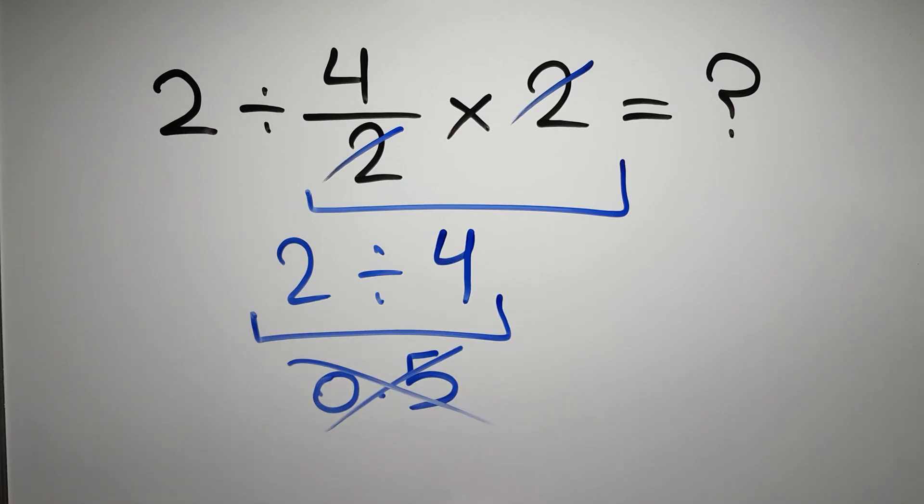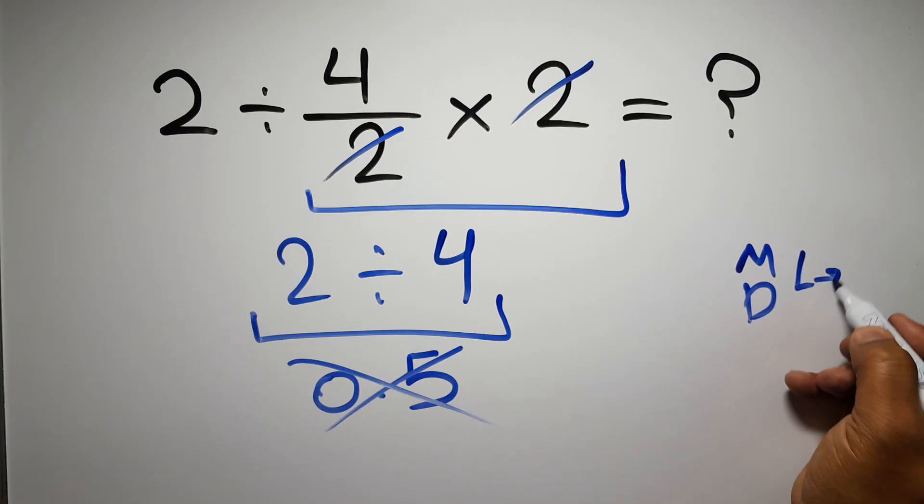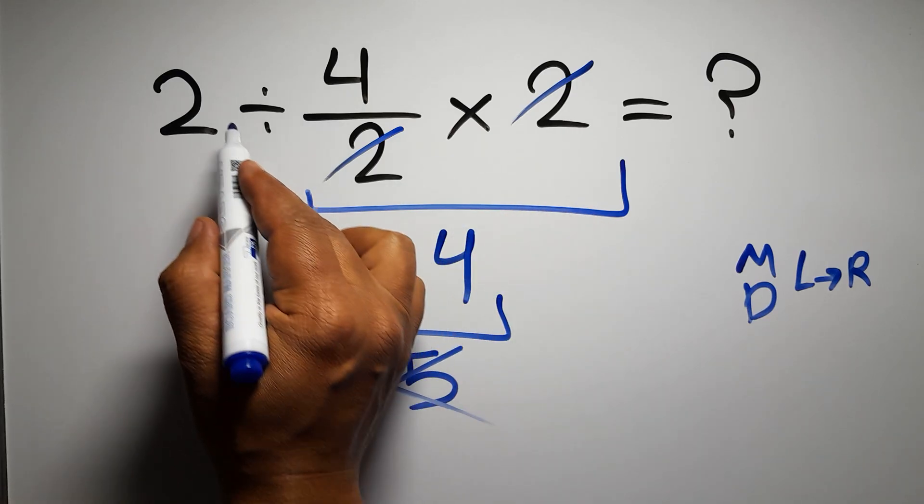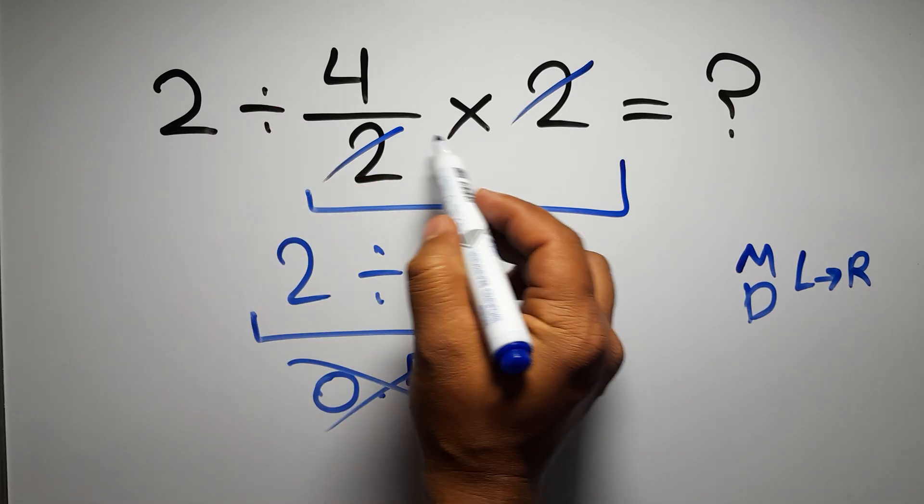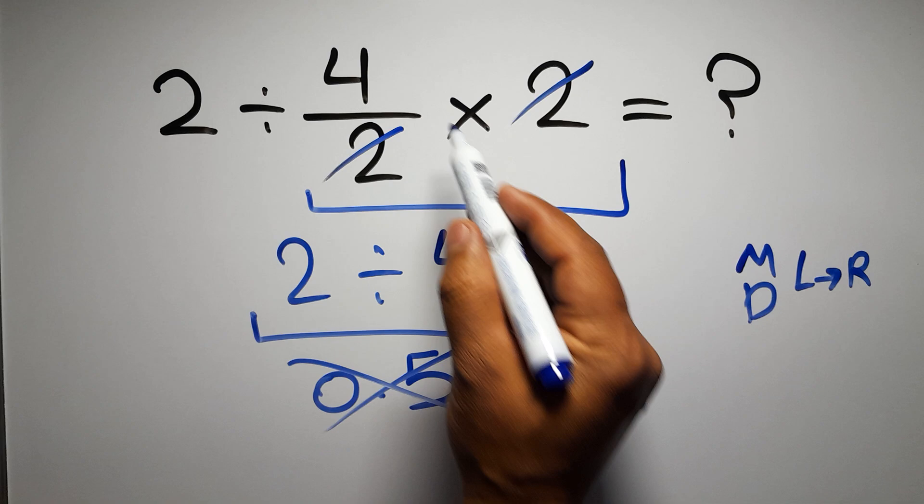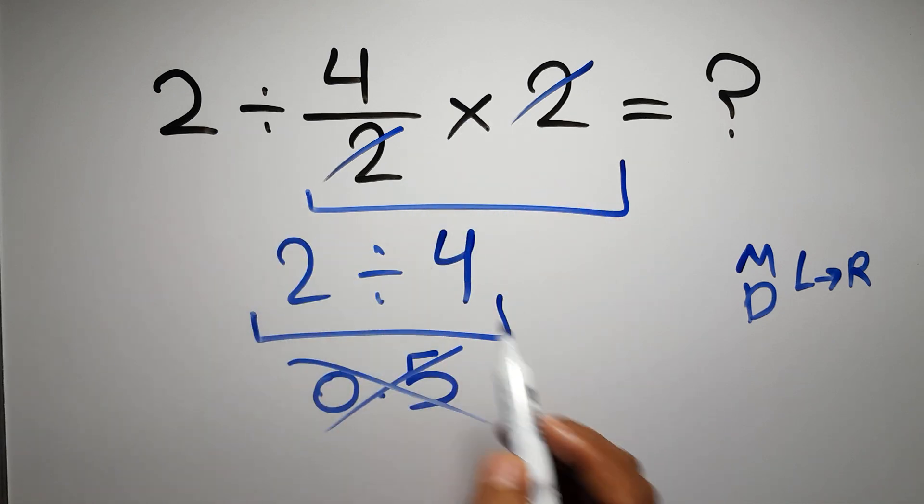But this answer is not correct, because according to the order of operations, multiplication and division have equal priority, and we have to go from left to right. So here, first we have to do this division, then this multiplication. If we do this multiplication before this division, it is wrong.